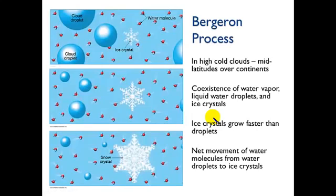The key here is that this process occurs in the higher, colder parts of clouds in the mid-latitudes over continents and over oceans as well. So the key here is that they have to be cold. It has to be clouds that are tall enough that you have a high part that's very cold.